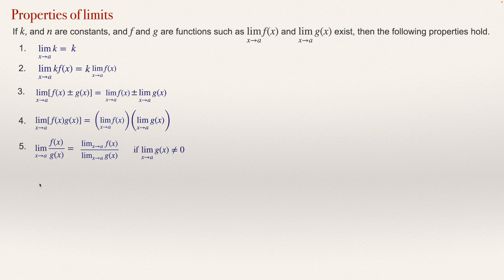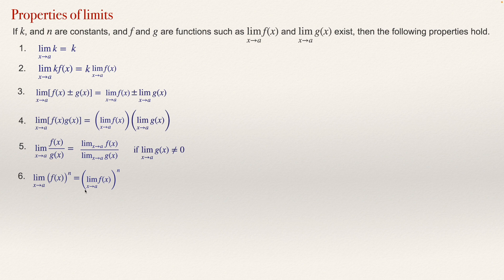As a sixth property, we have the limit of a power. If we have the limit as x approaches a of a function to the power n, that will be the limit of the function to the power n, if this limit exists. This limit property works even in the case when x approaches infinity.